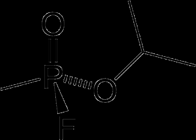Sarin is an extremely toxic synthetic organophosphorus compound. A colorless, odorless liquid, it is used as a chemical weapon due to its extreme potency as a nerve agent.